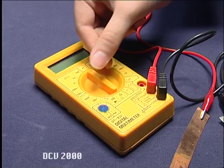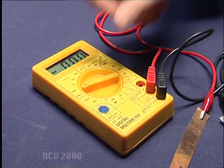To measure the voltage, DCV2000 condition is used in multimeter.